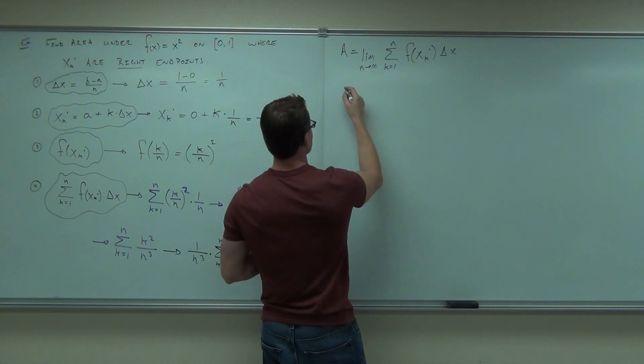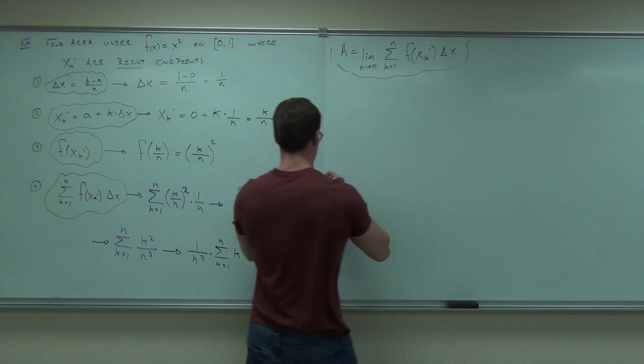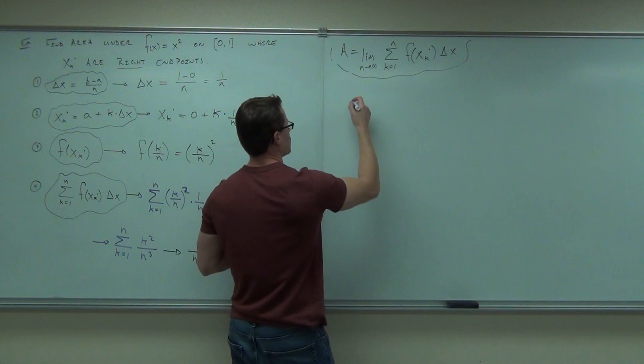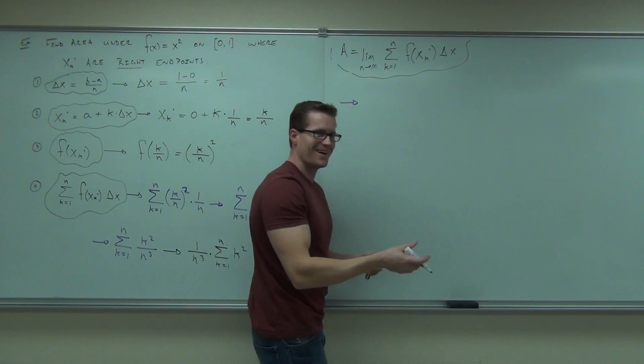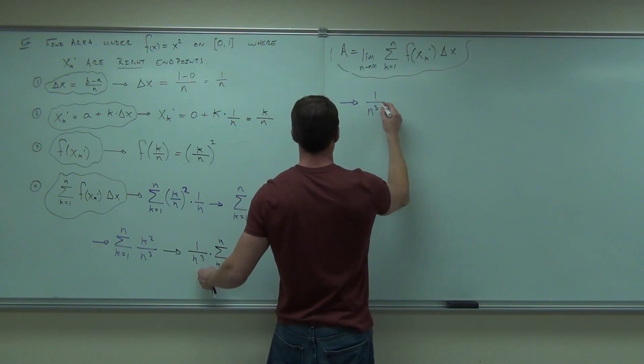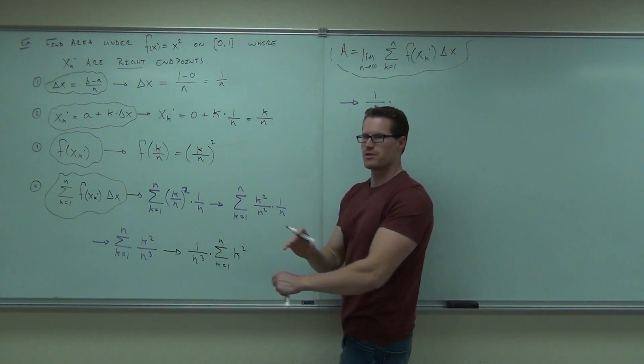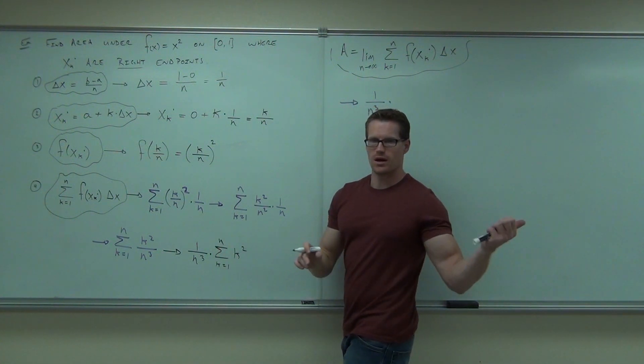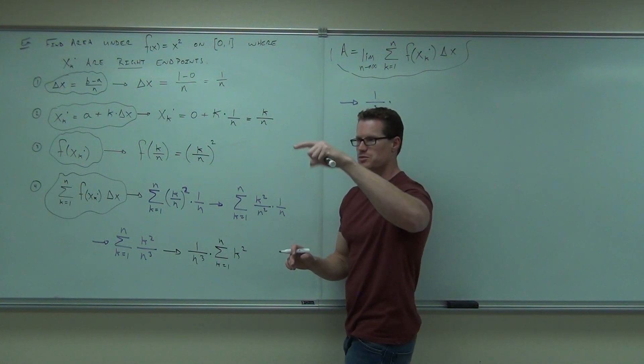Do you remember it? Something over 6 here. It is n times parenthesis n plus 1, parenthesis, parenthesis 2n plus 1, all over 6. I didn't hear a word of that, but I'm just going to do it on my own. The 1 over n cubed stays the same. Times the summation from 1 to n. You have this in your book. I've given it to you before. I think you were probably right if you just read it off that. It's n, n plus 1, 2n plus 1, all over 6.